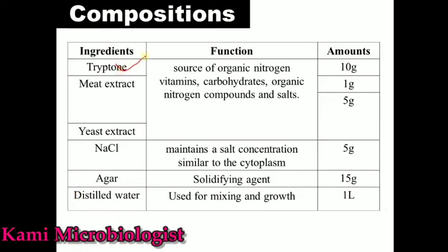Now, what are the compositions of nutrient media? Nutrient media contains tryptone, meat extract, and yeast extract. All these components are specially used as nutrients because they act as vitamins, carbohydrates, organic material, and provide salt concentration. Due to these materials, bacteria can get nutrients, release energy, and grow and divide.